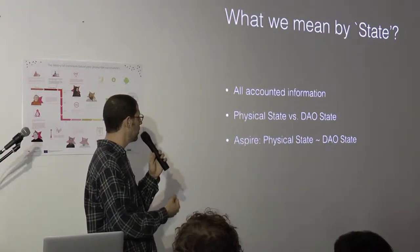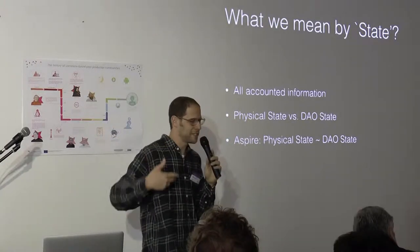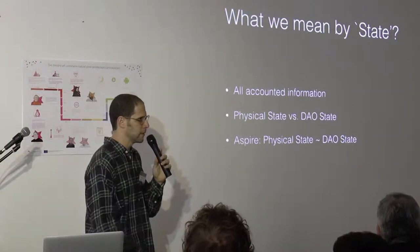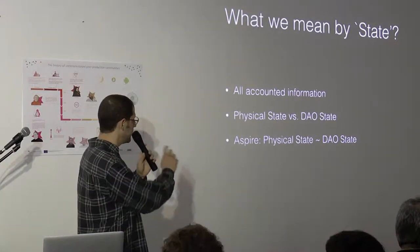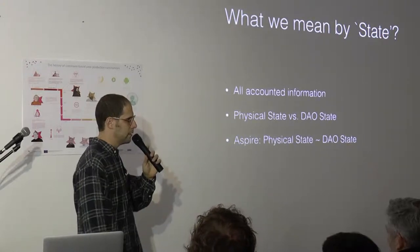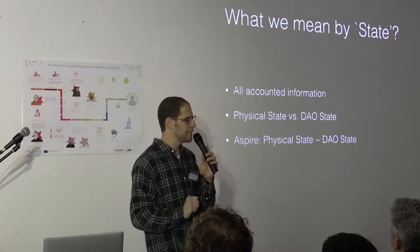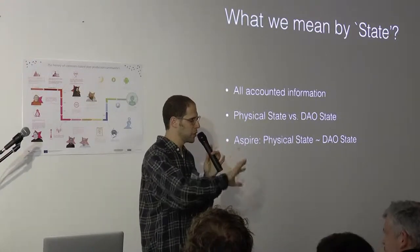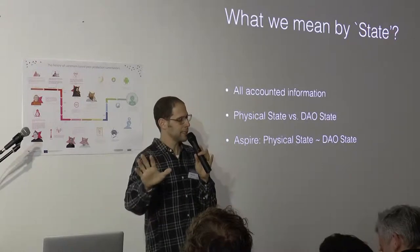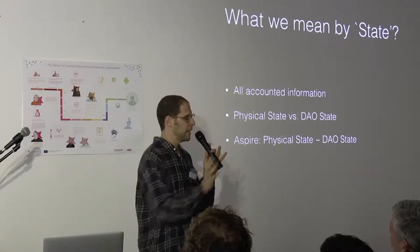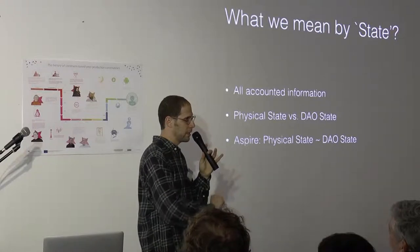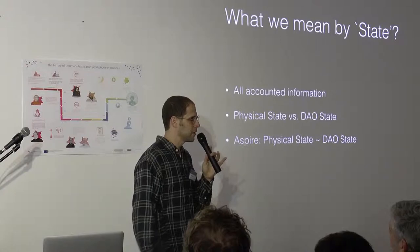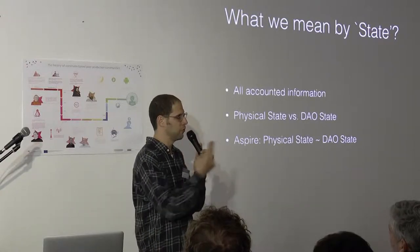There's also a physical state. The physical state, as a physicist, is just all the information that we can extract from the current moment. Now, it doesn't have to be the same as the DAO state. You can have two different physical states that in terms of value and contribution are the same. But in one state, Alice and Bob are friends. In the second state, Alice and Bob are enemies. Maybe your protocol does not distinguish between those two states, so it will be one DAO state with two physical states.